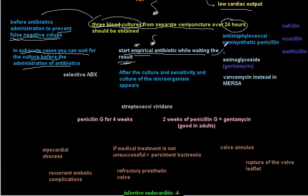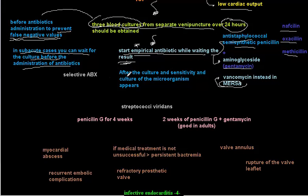For empirical antibiotics, you can give antistaphylococcal semisynthetic penicillins — nafcillin or oxacillin — plus aminoglycosides such as gentamicin. If you have MRSA, you can give vancomycin.